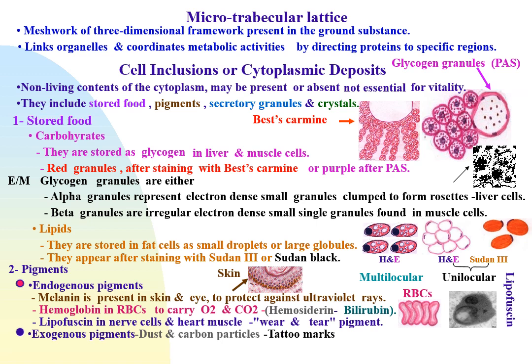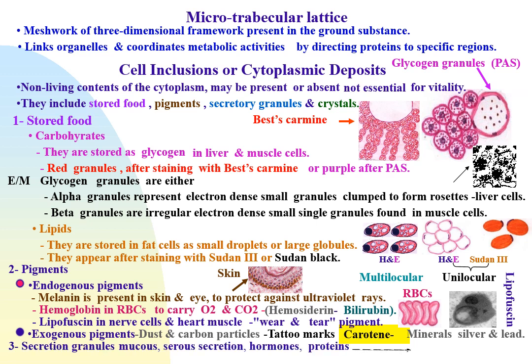Carotene, ingested with food such as carrots and tomatoes, causes carotenemia, which is yellow coloration of the skin as a result of excessive ingestion of carrots. Minerals such as silver and lead may be demonstrated in phagocytic cells of the liver. Secretory granules include mucus, serous secretion, hormones, proteins, and so on. Crystals include crystals of calcium carbonate.